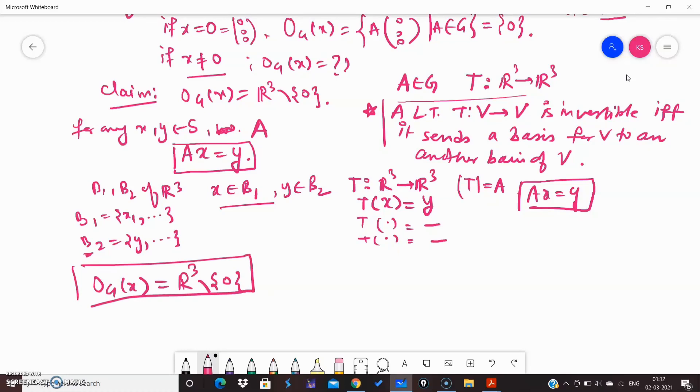So there are only two orbits. One is corresponding to the zero vector and another one is corresponding to a non-zero vector.